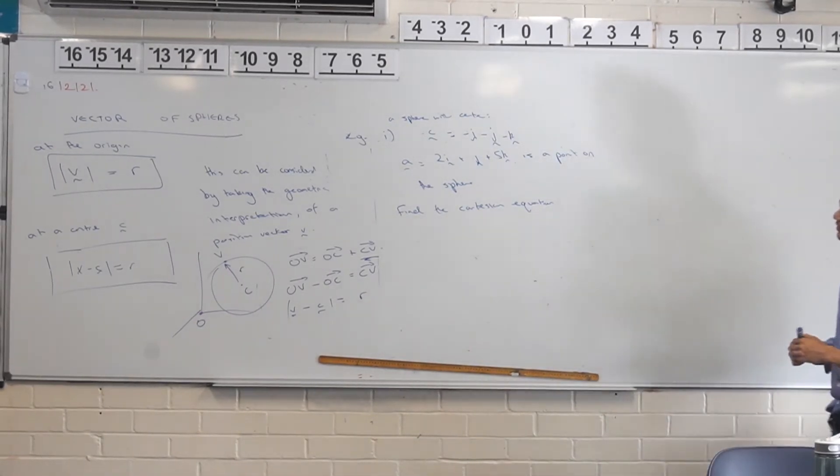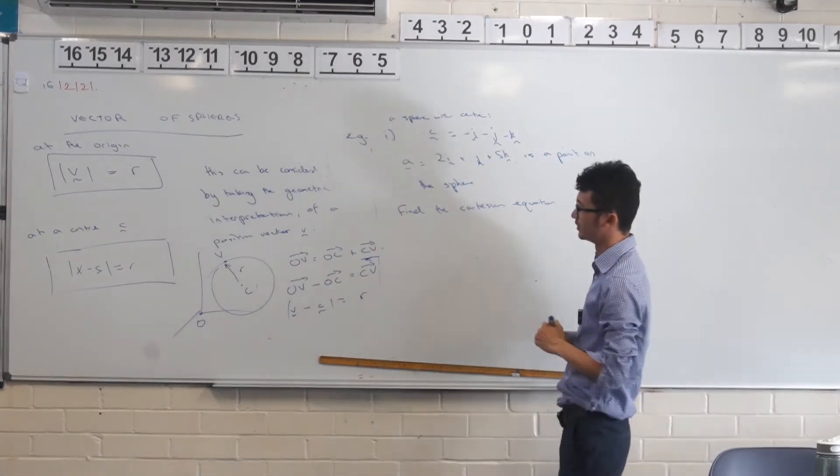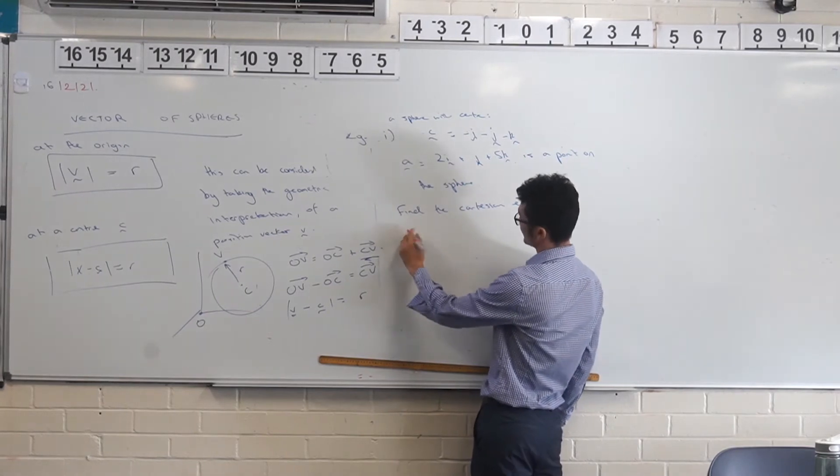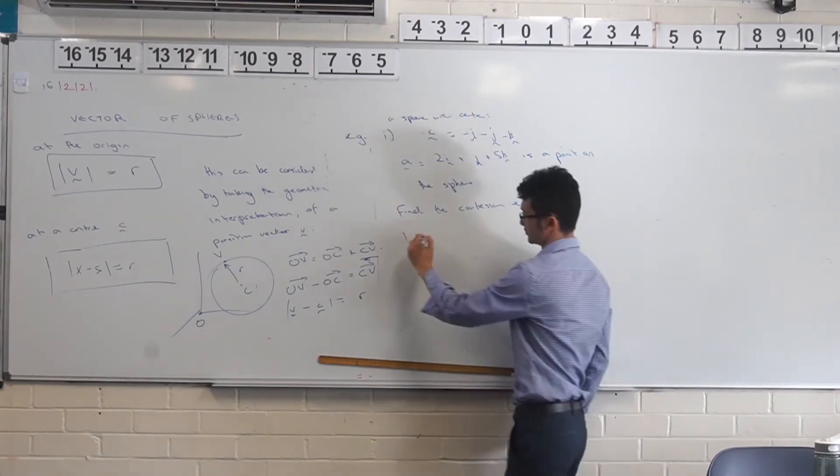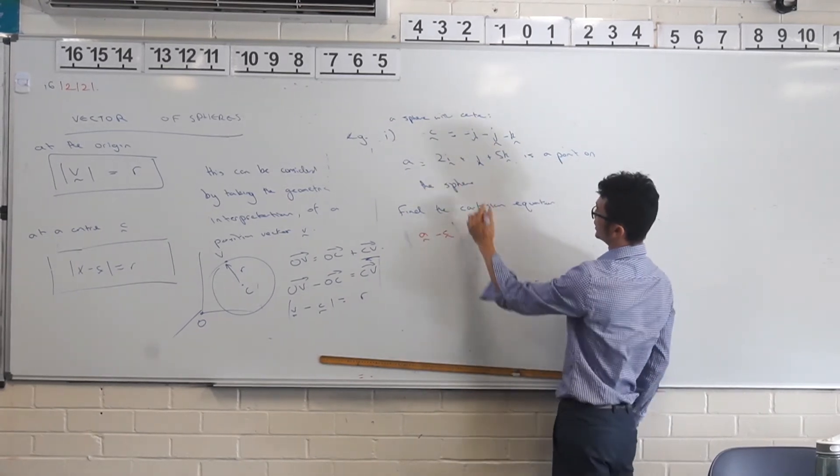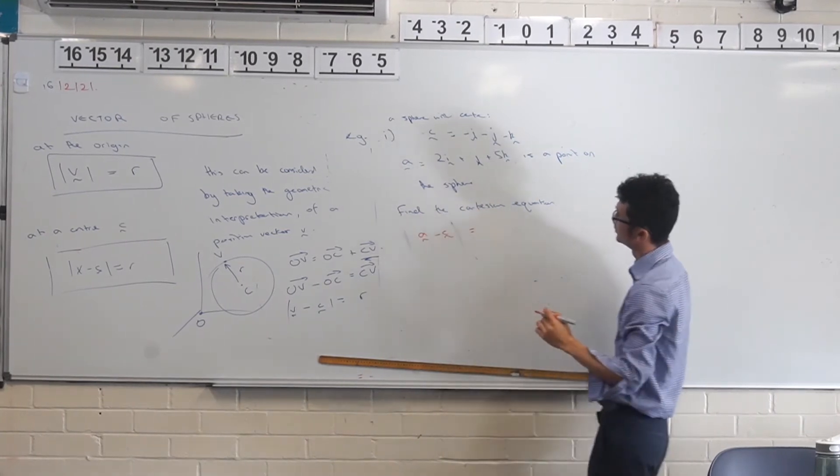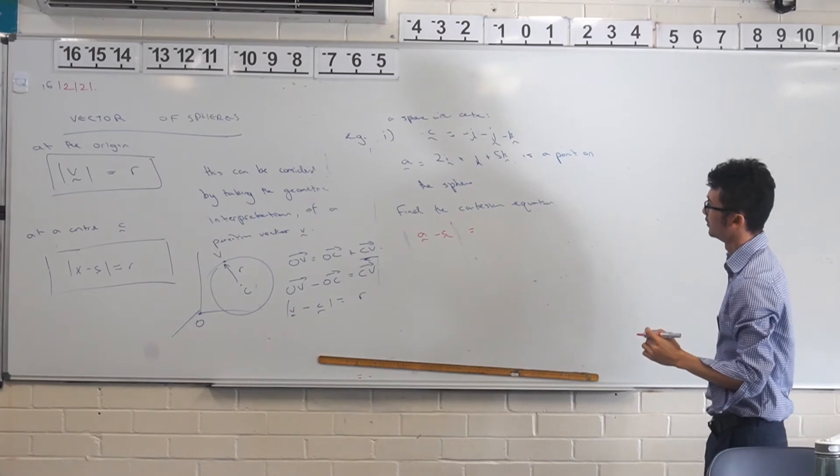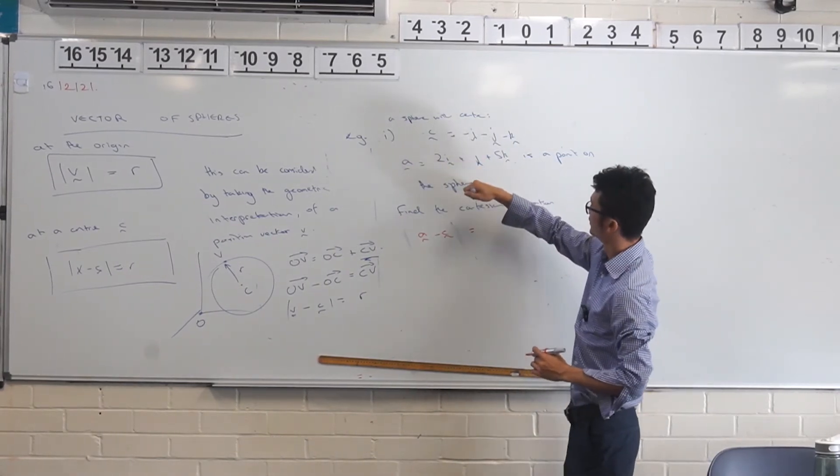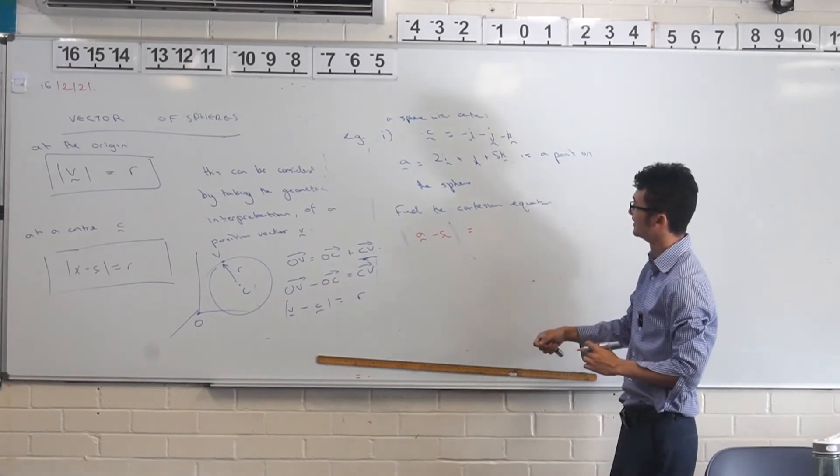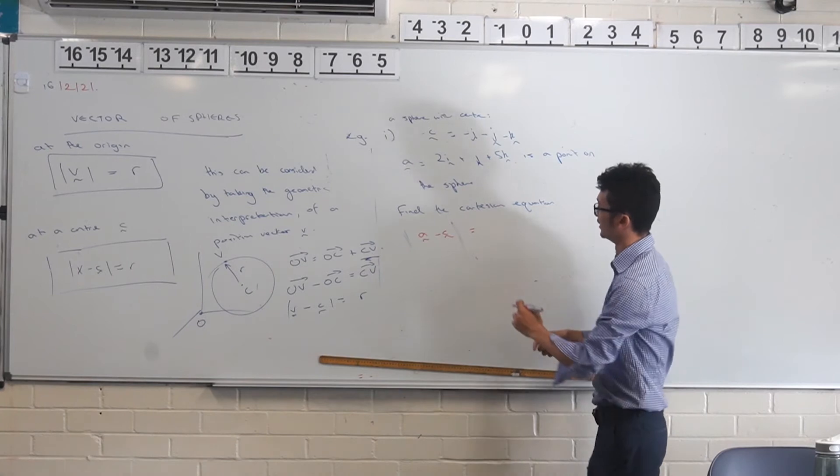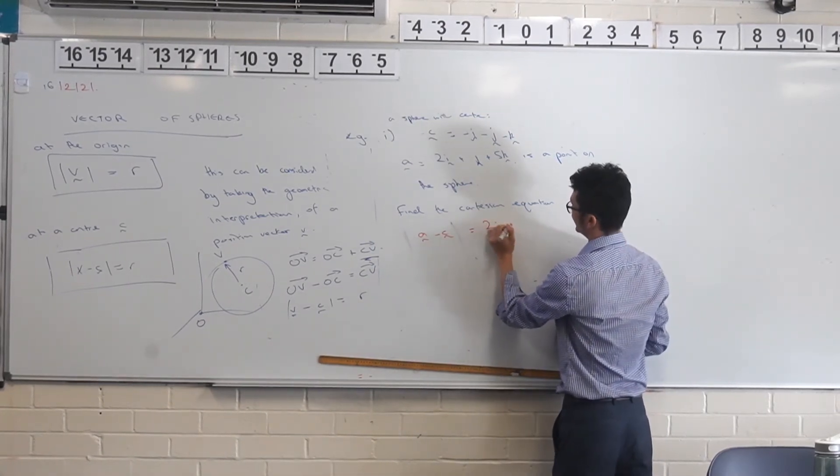How would you find the Cartesian equation? So we have all this information here, we have a center, we've got a point in the sphere, and we'll find the Cartesian equation here. Have a think what we could do. We can find the radius with that formula we just found. So like 2i + j + 5k minus, I guess, plus i + j + k. Which I guess we can go through. So I'll find A minus C first. You're writing out the whole thing first, I guess we could just do it straight away. Either way is fine.